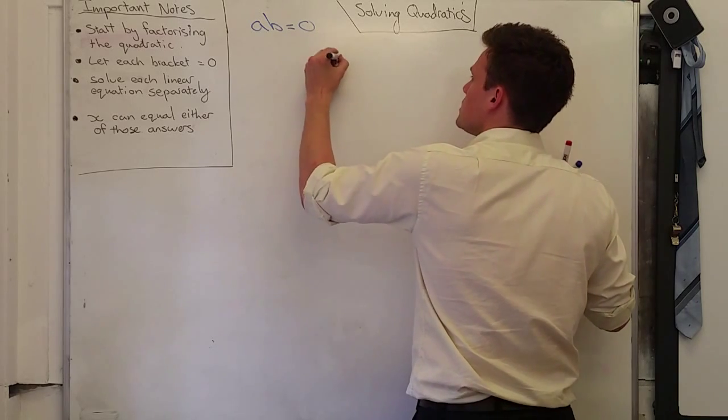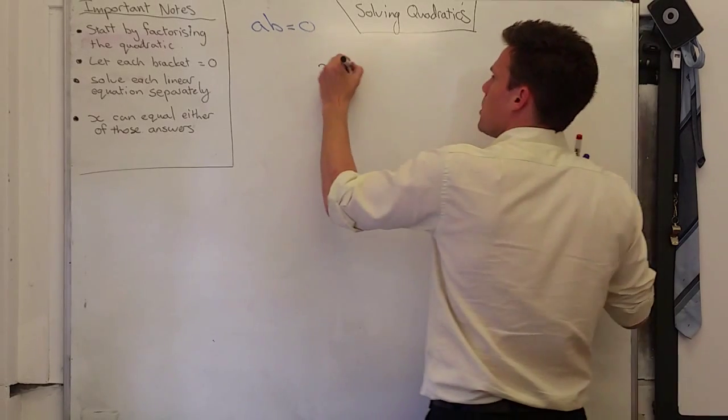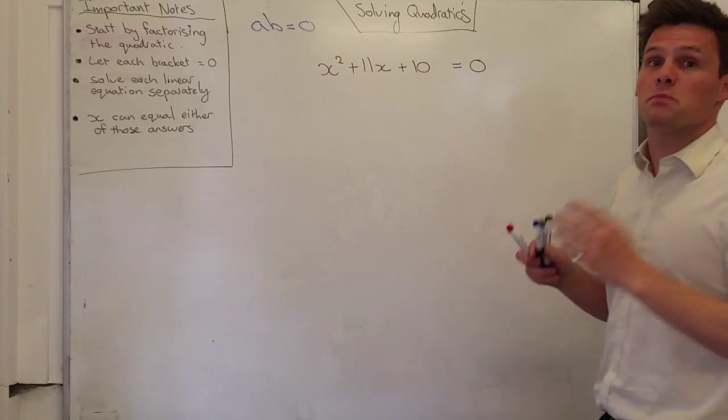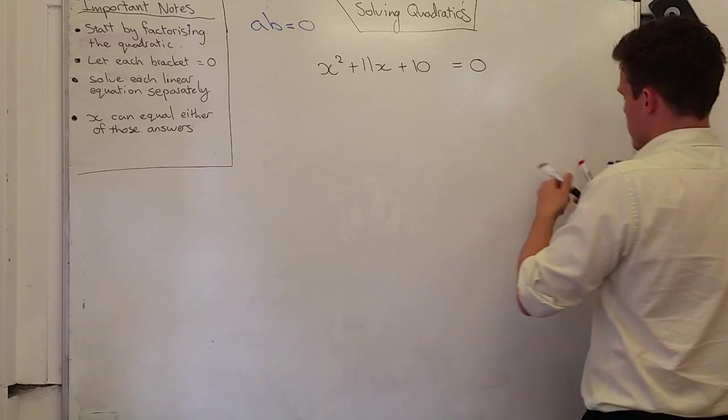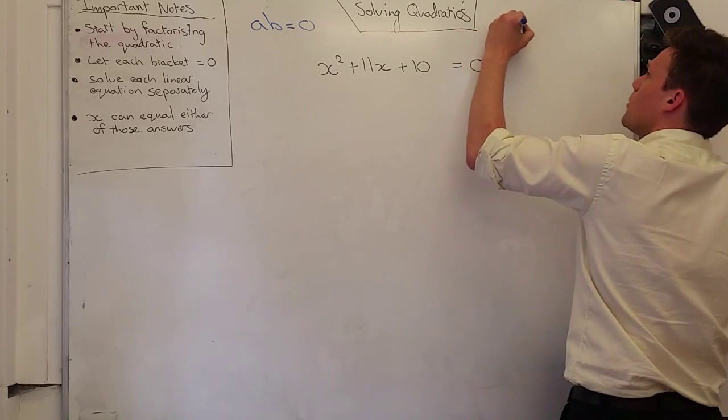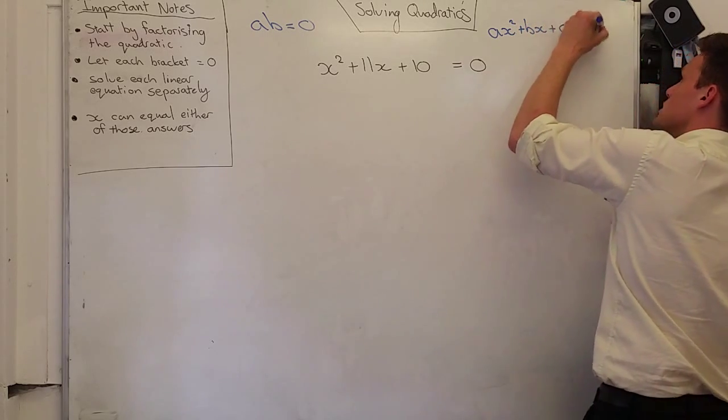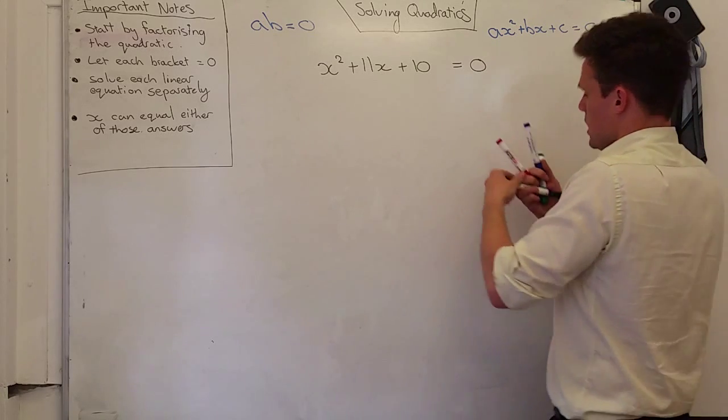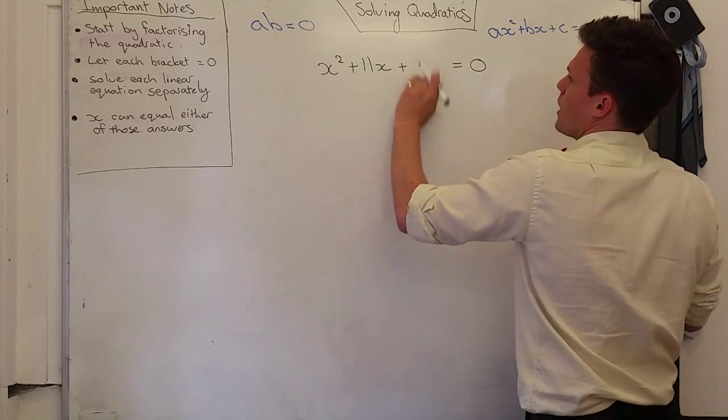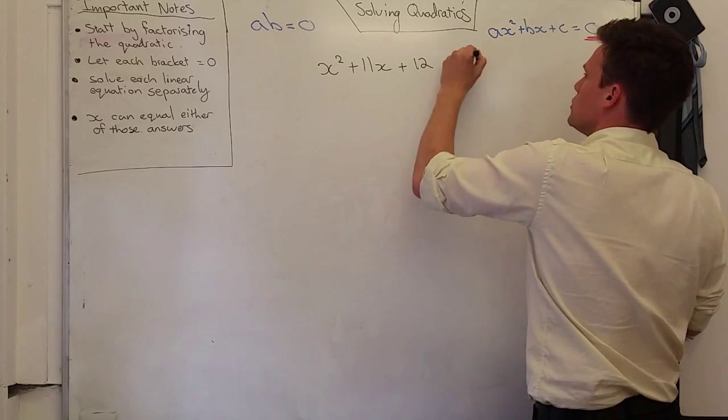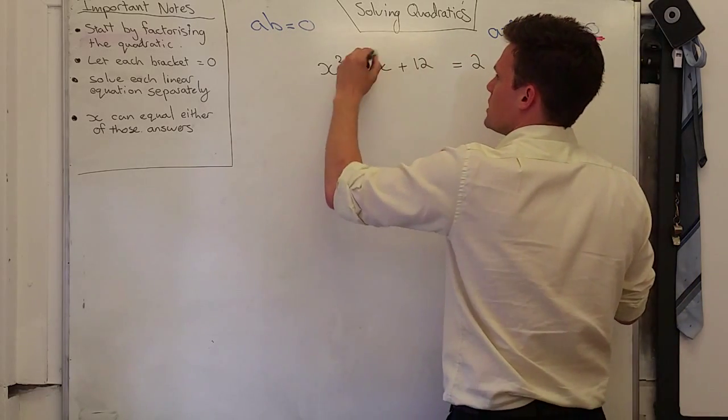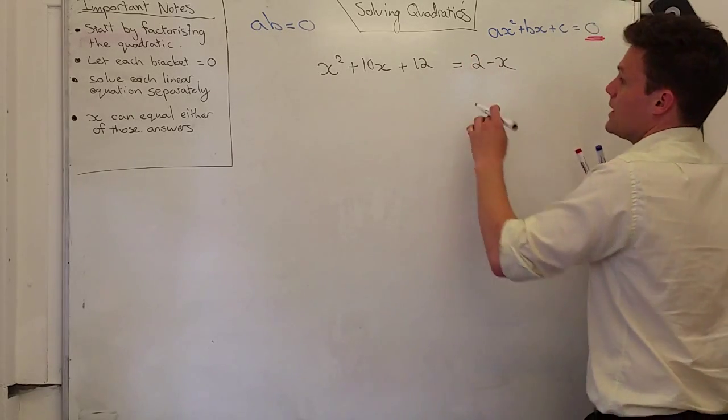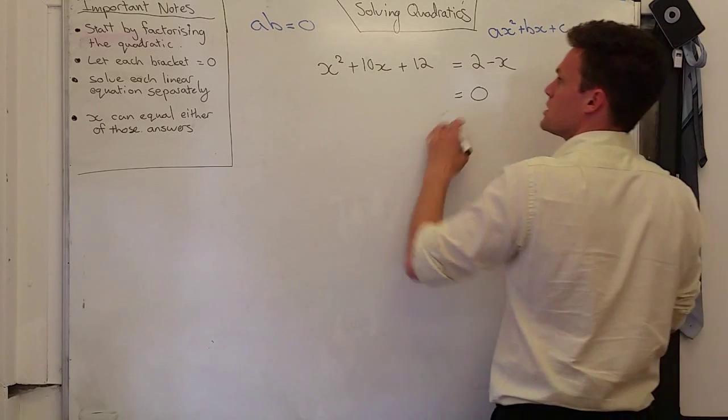If I have x squared plus 11x plus 10 equals 0. Now, it must be in this format. It must be in the format of ax squared plus bx plus c equals 0. And this 0 here is very, very important. The question could have been something like plus 12, and this could have said equals 2, or it could have said plus 10x, and that could have been 2 minus x, something like that. But either way, I need to then get it into the format where I have 0 on the other side.